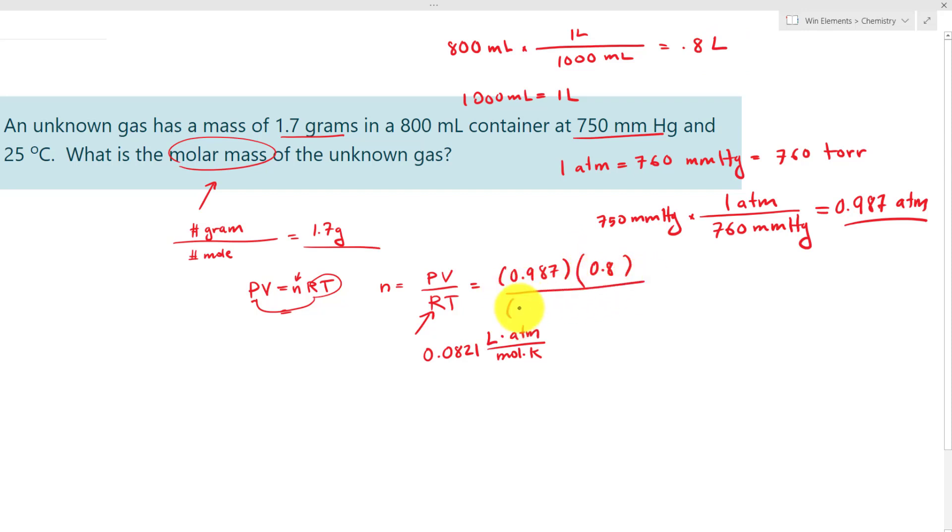Now for R, we already know it's a constant, so it doesn't change, 0.0821. And for the temperature, we know we have to convert to Kelvin, and Kelvin equals Celsius plus 273. In this case, 25 plus 273, that gives us 298.